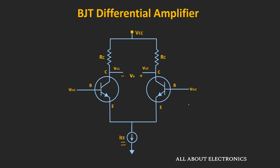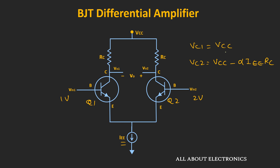The reverse is also true: whenever Q2 is at 2V and Q1 is at 1V, the entire current IEE will be drawn by Q2, making Vc2 = Vcc − α × IEE × RC, while since Q1 is OFF, Vc1 = Vcc. As you can see, even with a 1V differential input voltage, it is possible to steer the entire bias current from one side of the pair to the other. Because of this current steering property, the differential amplifier is widely used in logic circuits.